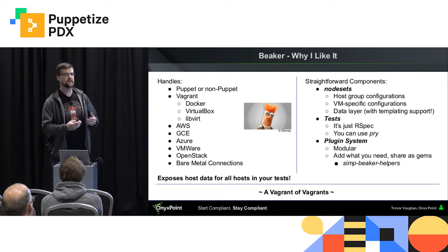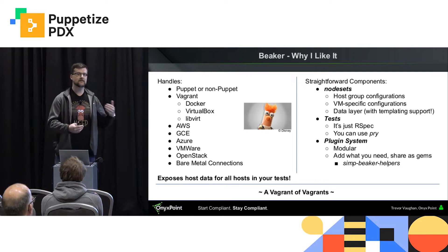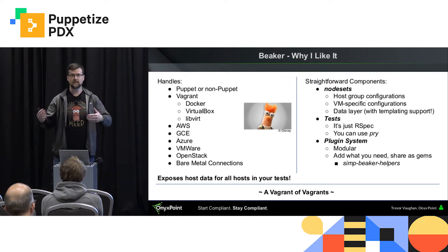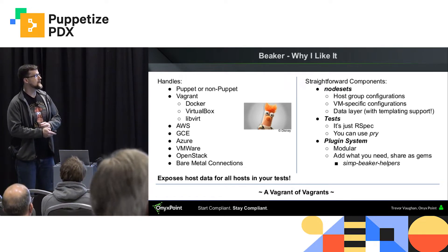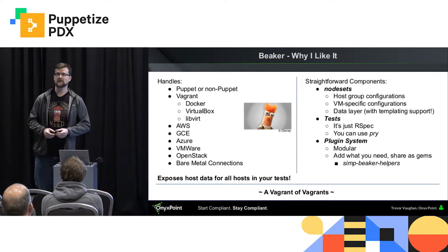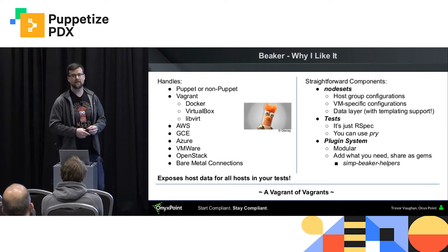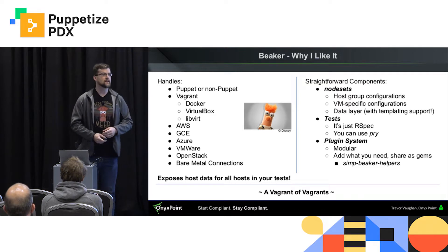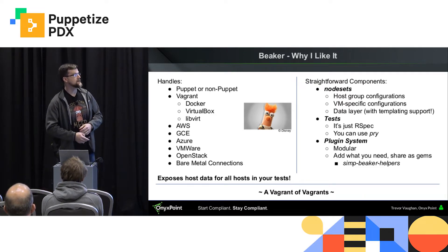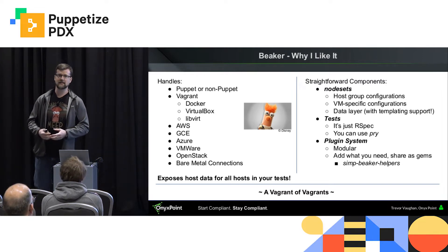It has very straightforward components: node sets, which are host group configurations, and virtual machine-specific configurations if you wanted to use a combination of Docker and VirtualBox or Docker and GCE. The tests are just RSpec — being just RSpec means you can use tools like Pry, a Ruby tool for digging into code and giving you a REPL environment for live debugging. It has a plugin system that is quite modular, and you can add basically what you need and share them as Ruby gems.